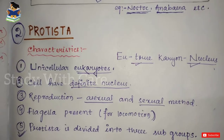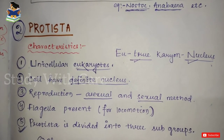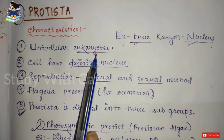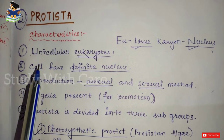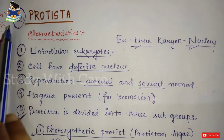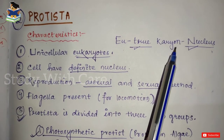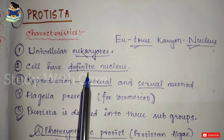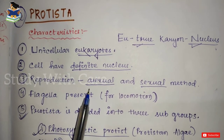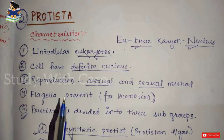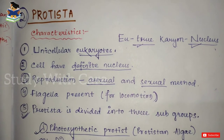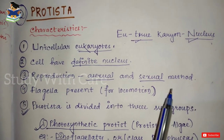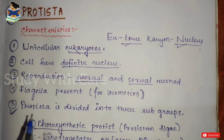The second kingdom is Kingdom Protista. The major characteristic is that this is the kingdom of unicellular eukaryotes — all eukaryotes that are unicellular in cell structure are included in the Protista group. 'Eu' means true and 'karyon' means nucleus, so these organisms have a true, well-defined nucleus. Reproduction is by both asexual and sexual methods — unlike Monera where only asexual reproduction and sometimes genetic recombination occur.